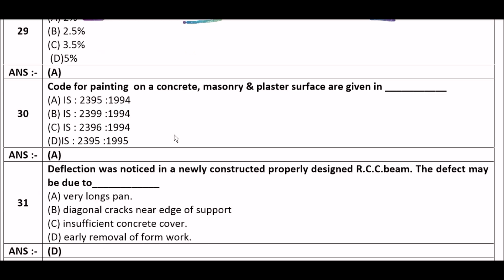Next question: The code for painting on concrete, masonry, and plaster surfaces is given in — option A: IS 2395:1994, option B: IS 2399:1994, option C: IS 2395:1994, option D: IS 2395:1995. The right answer is option A — IS 2395:1994. This is an important question: the code for painting on concrete, masonry, and plaster surfaces is IS 2395:1994.